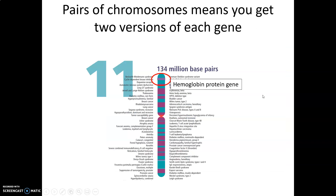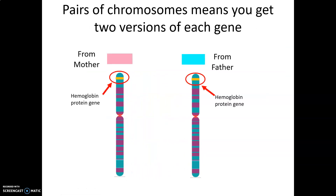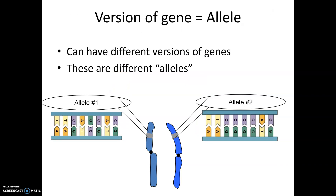This means that you get two versions of each gene — one from your mother and one from your father. While you get a copy of every single gene from both your mother and your father, the version might be different. We call these different versions of genes alleles. The different alleles are for the same gene, but the code might be slightly different.